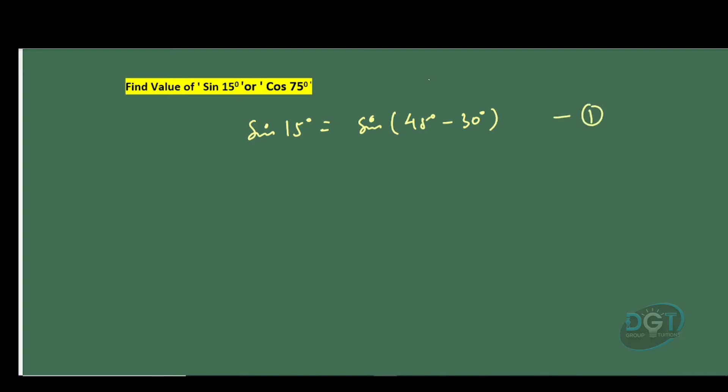Now we'll use the formula for sin(A - B), which is sin A cos B minus cos A sin B. Here we can put A as 45 degrees and B as 30 degrees.